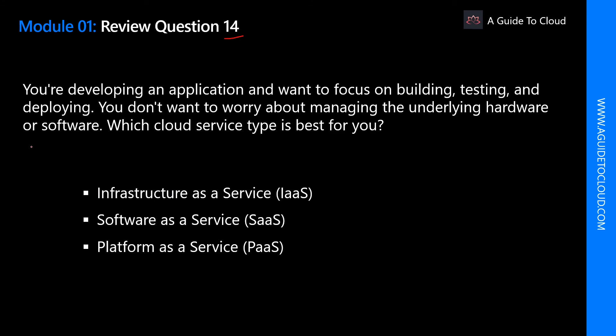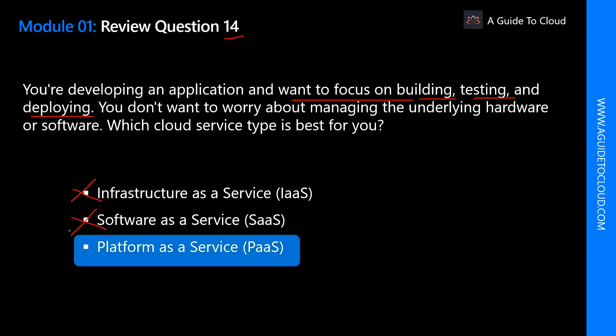Question 14: You are developing an application and want to focus on building, testing, and deploying. You don't want to worry about managing the underlying hardware or software. Which cloud type is best for you? The keyword is 'building, testing, and deploying.' Infrastructure as a service is not correct because with IaaS you would worry about managing underlying hardware and software. Software as a service is not correct because SaaS doesn't give you the ability to build, test, and deploy your own application. The correct answer is platform as a service, because PaaS handles the IT management tasks for you.